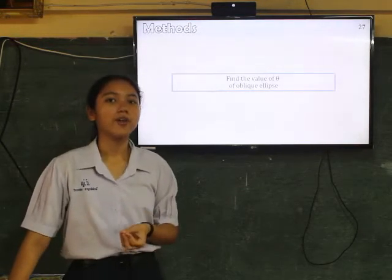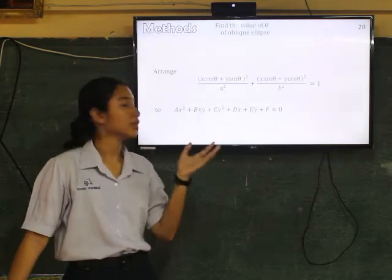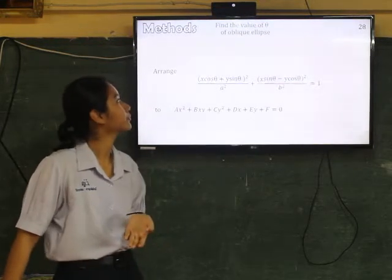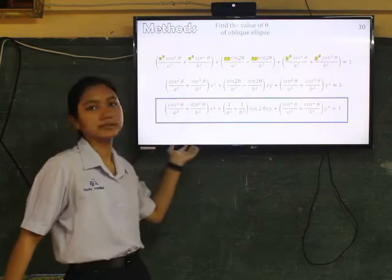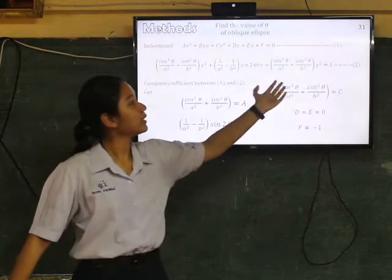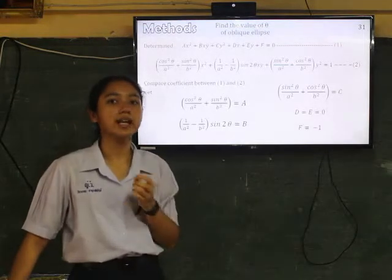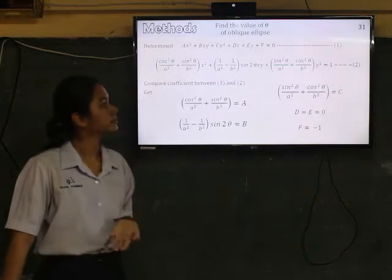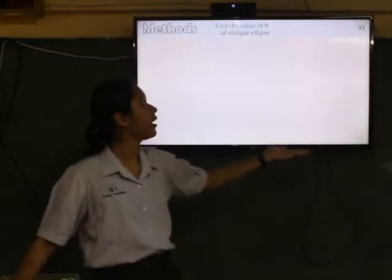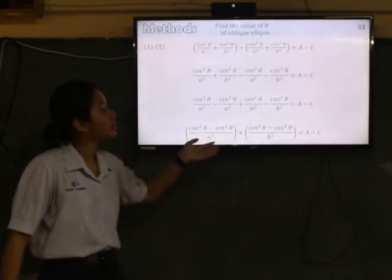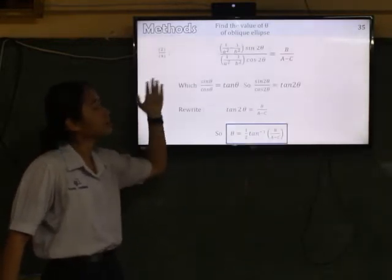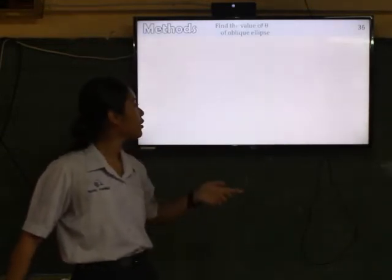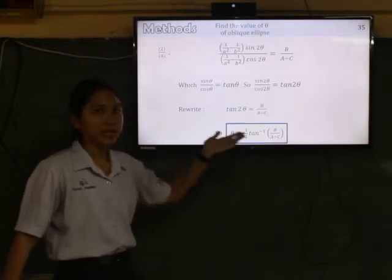Next step is to find the value of theta of oblique ellipse, by converting the standard form to general form. From the standard form of oblique ellipse, then solving equation and forming equation until we get this equation. And this means this is the first equation. This is the second equation. And then compare coefficients between the first equation and the second equation. Then get like this. Solving equation by setting this is first, this is second, and this is the third equation. First, bring the first equation minus the third equation. Then solving equation and forming equation until we get this. And setting this in the fourth equation. So we get the relationship to find the value of theta.